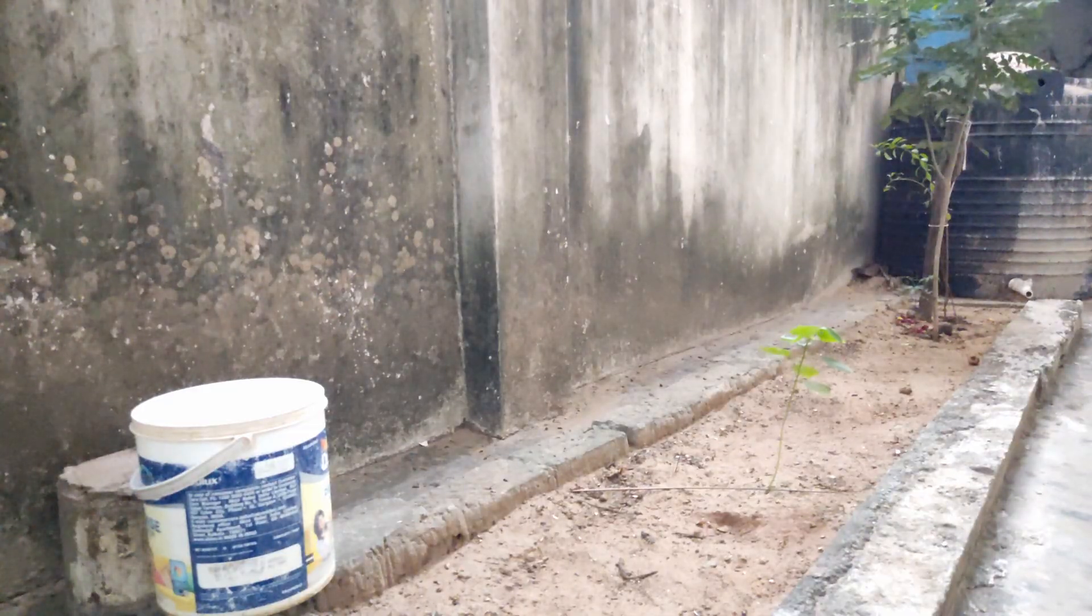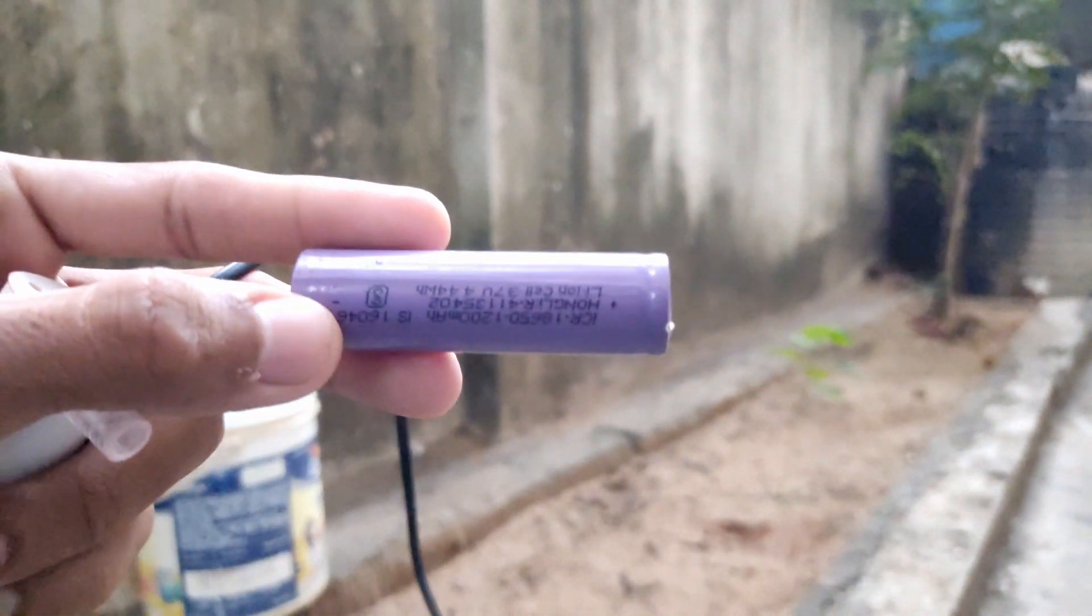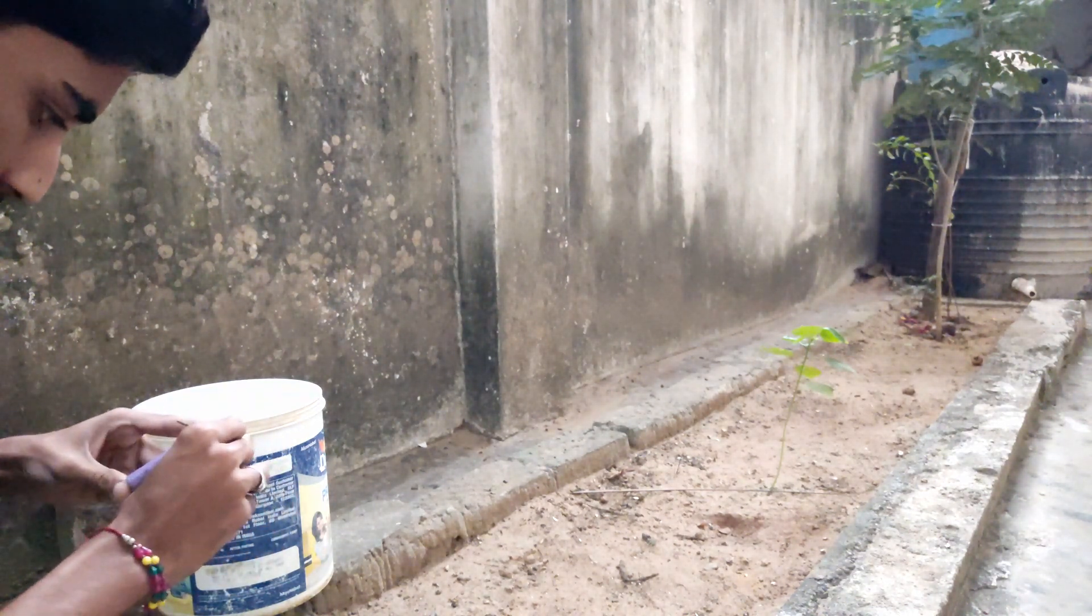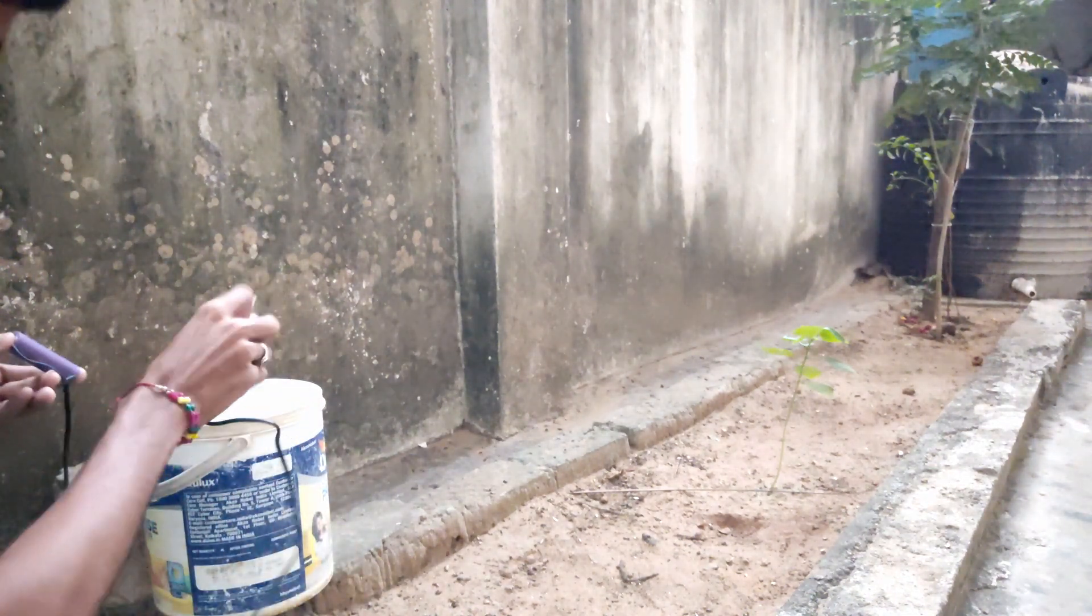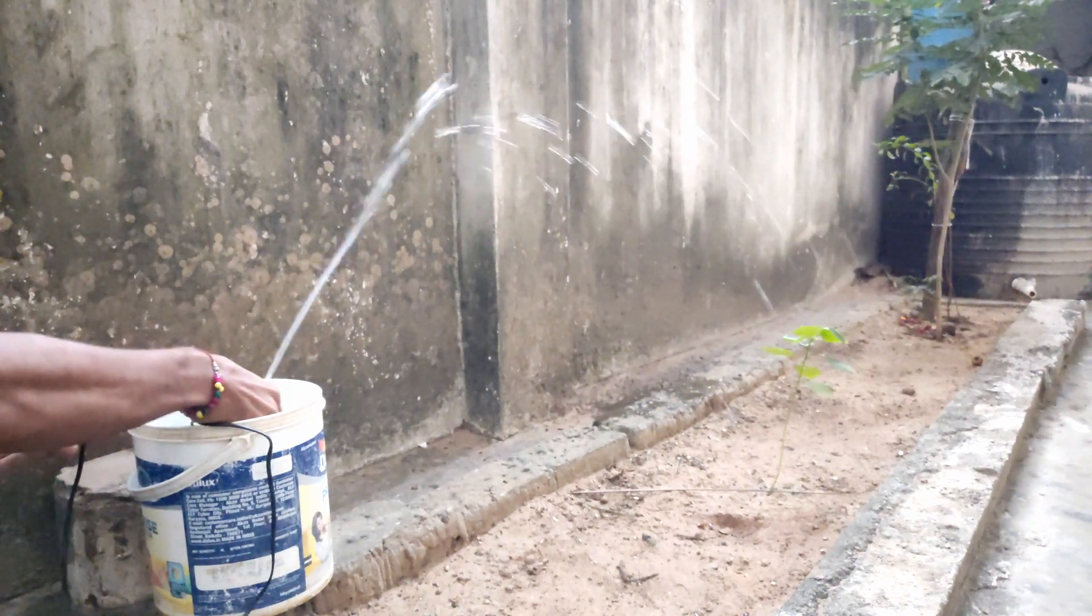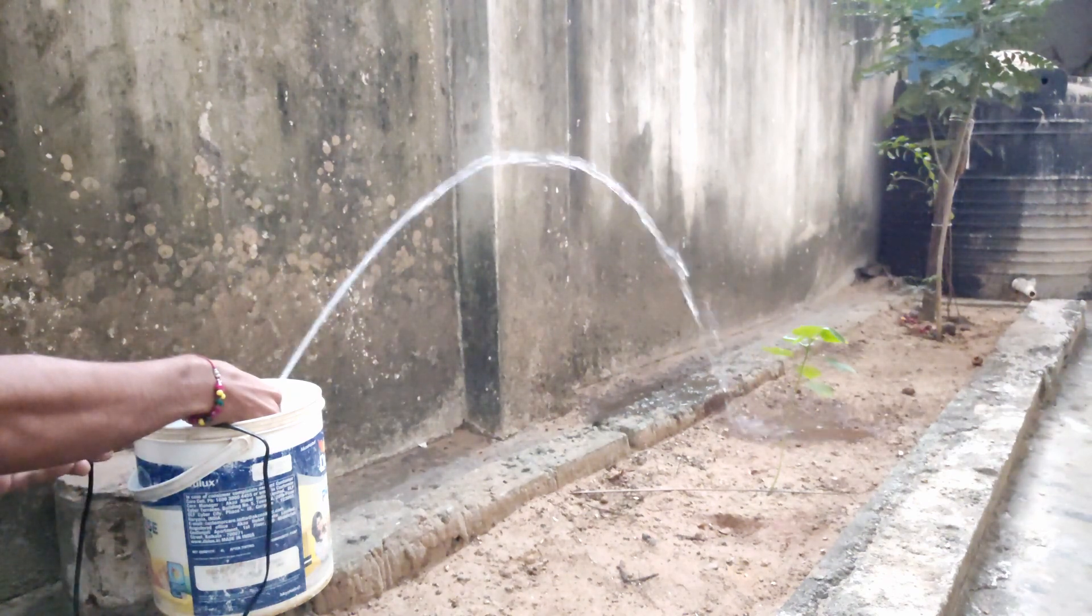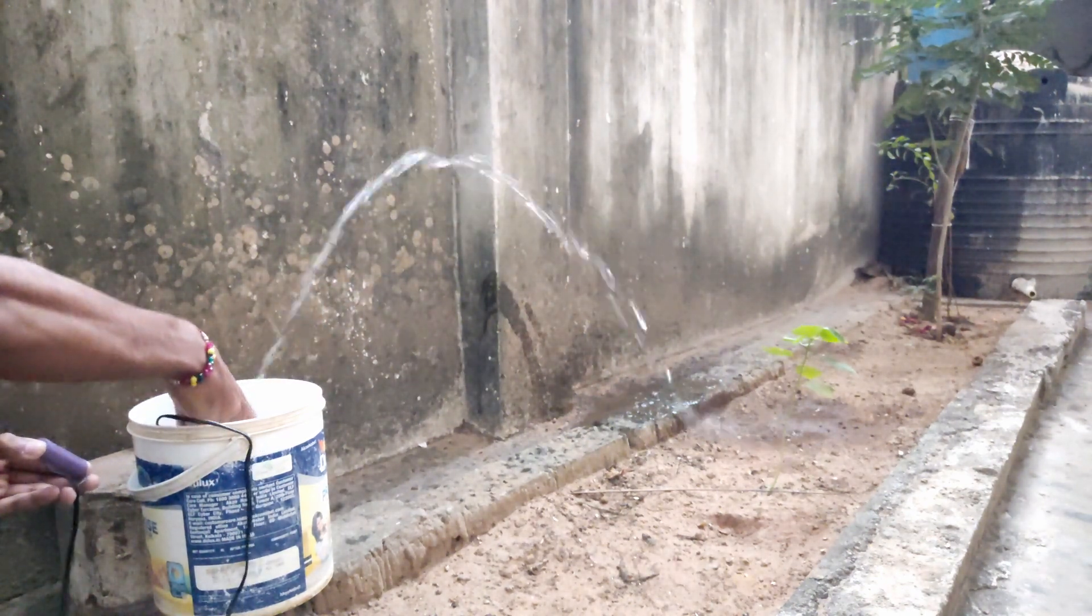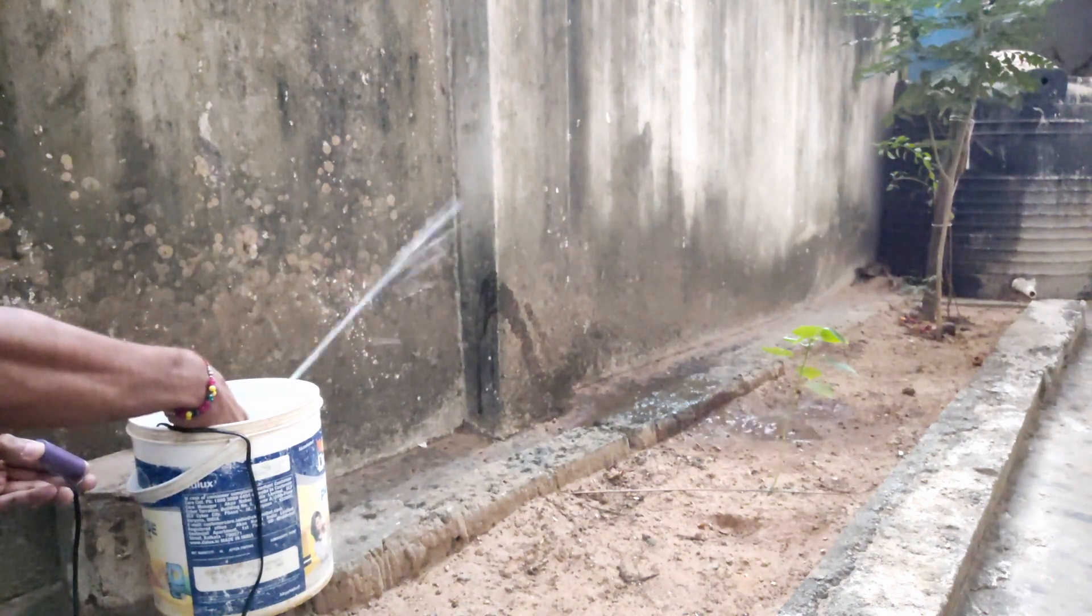Here is the water pump. You can use a 3.7V lithium-ion battery. Connect the motor wires plus and minus. You can see the water pressure working.